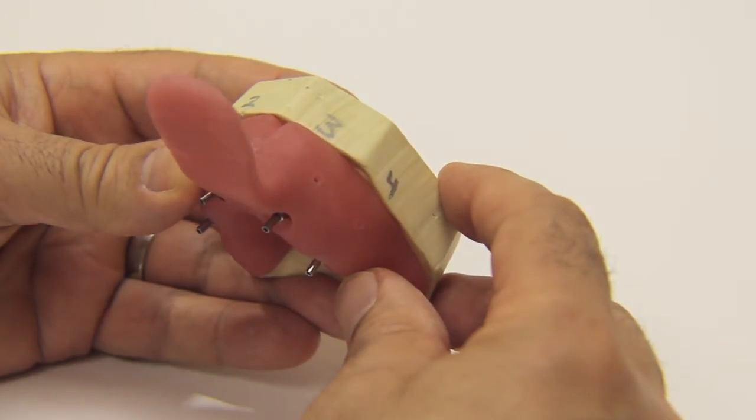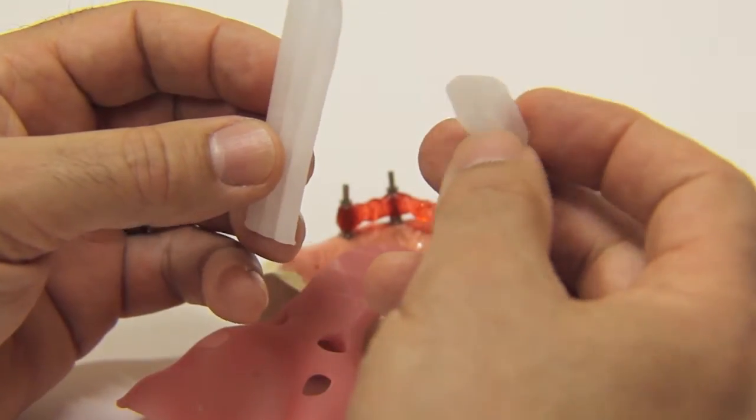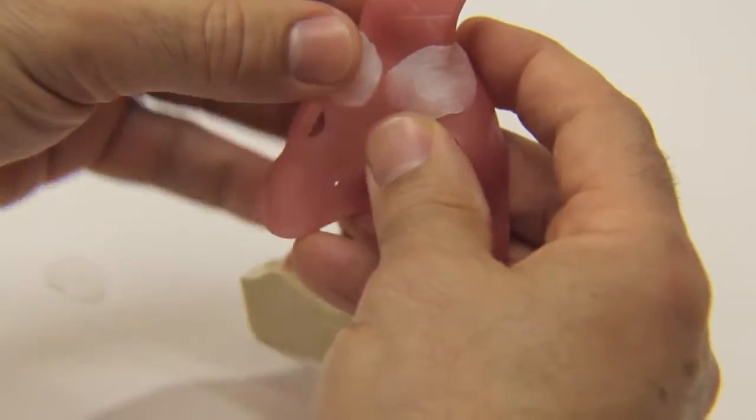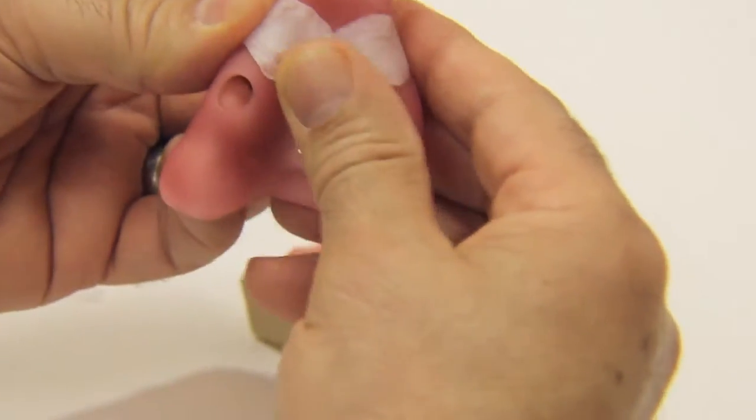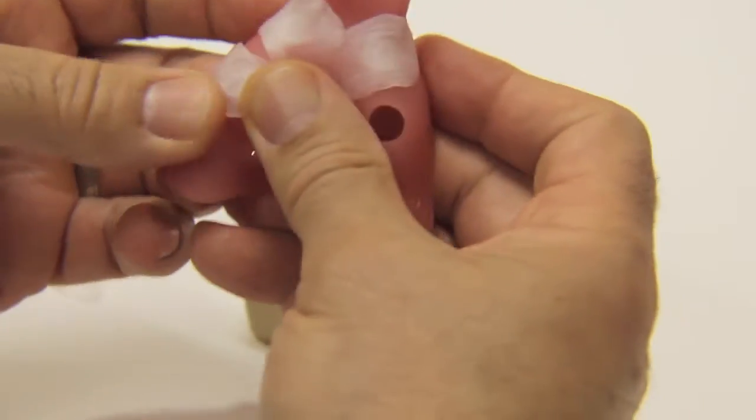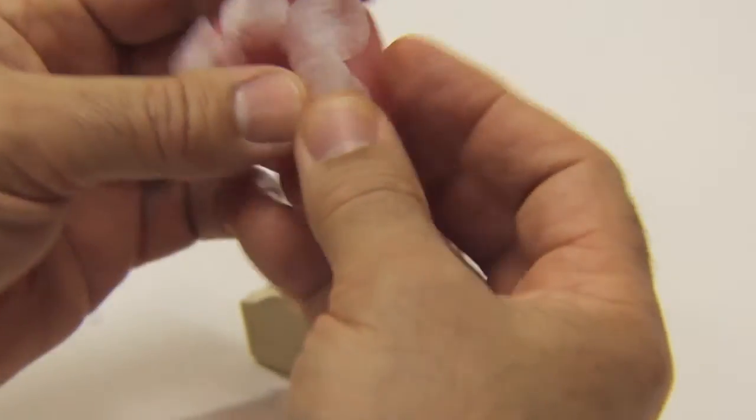Trial fit the custom tray over the verification jig and long guide pins. Apply a small amount of utility wax over the access holes on the custom tray. Be sure to use enough utility wax to fully cover each access hole.